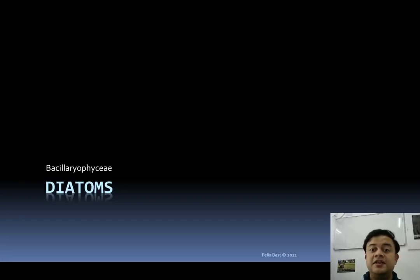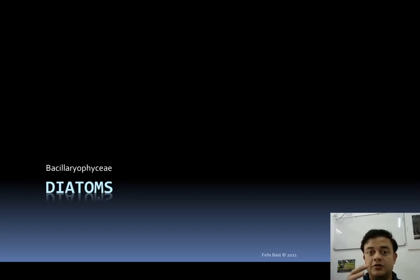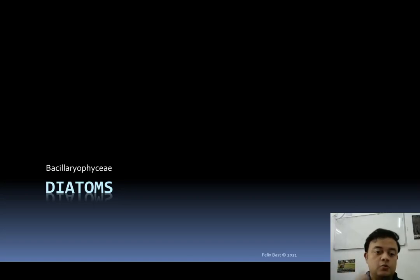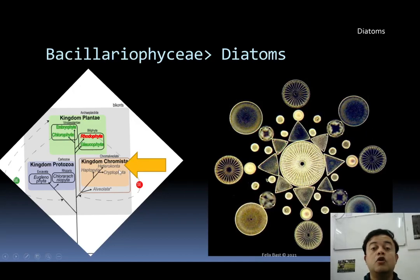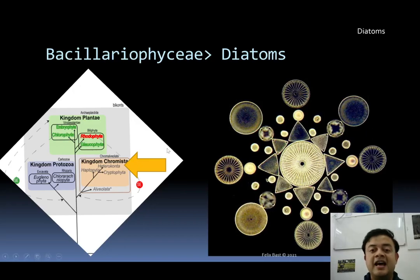Diatoms — as the name says — have two parts, like a petri dish with two thecae, and that is why the name comes from 'diatom.' They belong to the order Bacillariophyceae, and they are classified under Heterokonta, which means two flagella of unequal size.